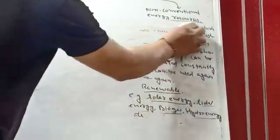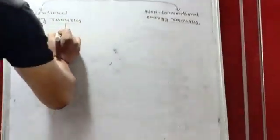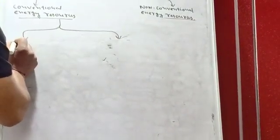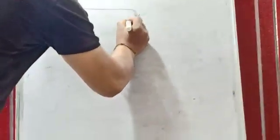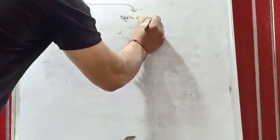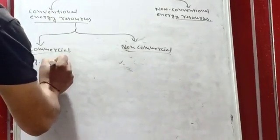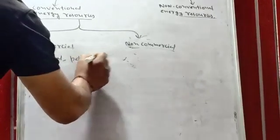This is further divided into two types: one type is Commercial, another is Non-Commercial. Commercial example? For example, coal, petroleum, electricity.